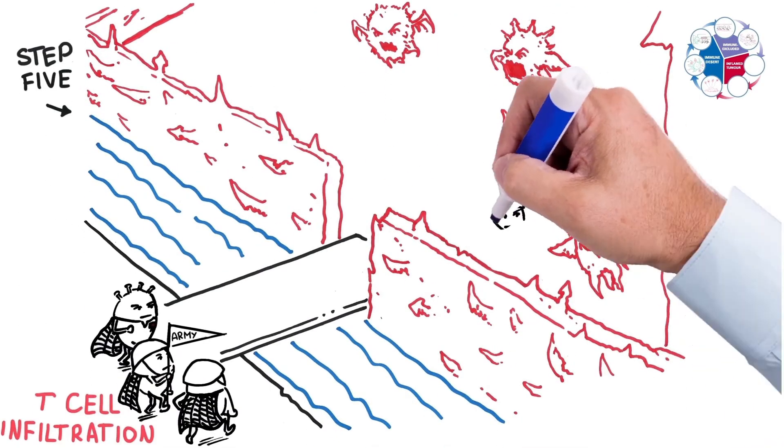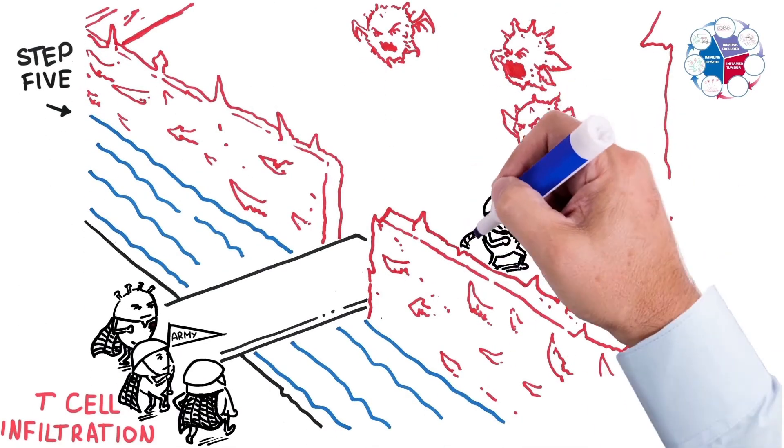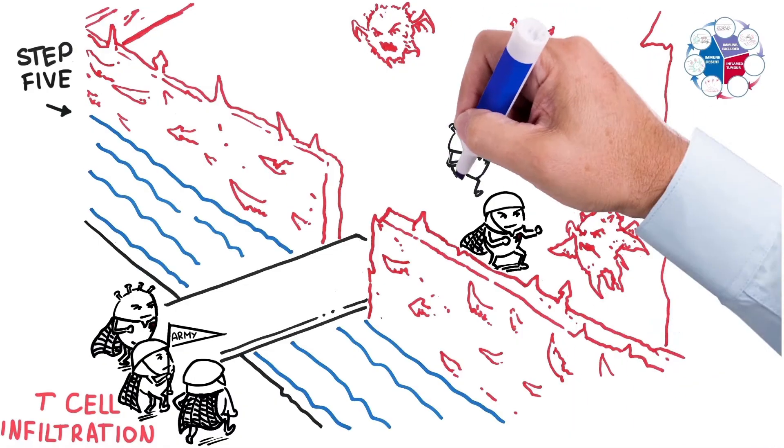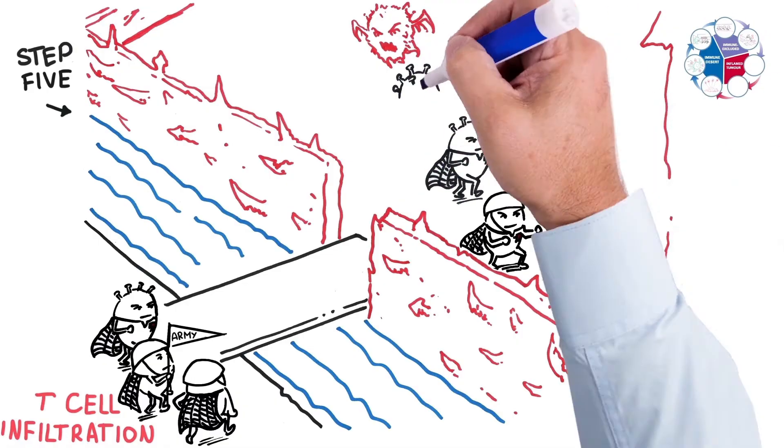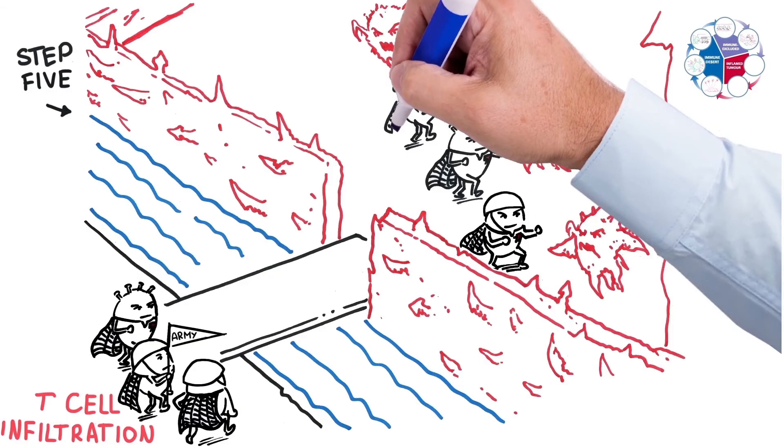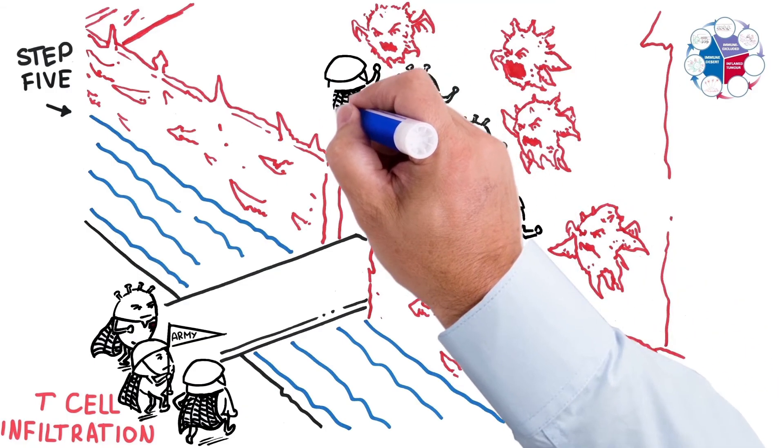In step five, the T cells have arrived at a location of the tumor and now need to infiltrate into the tumor by leaving the blood vessel and entering into the tumor microenvironment.